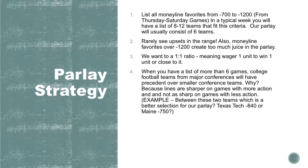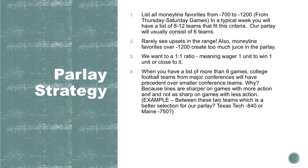When you have a list of more than six games, college football teams from major conferences will have precedent over smaller conference teams, because lines are sharper on games with more action. For example: which is a better selection for a parlay — Texas Tech minus 840 or Maine minus 750? The sportsbooks would take in far more money on the Texas Tech game than on the Maine game, making the line sharper and more reliable.